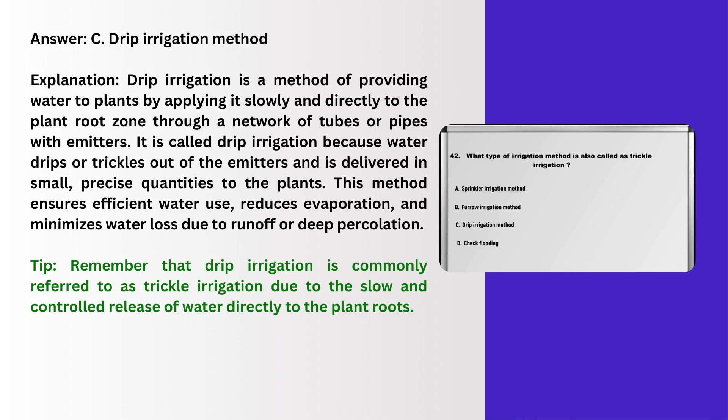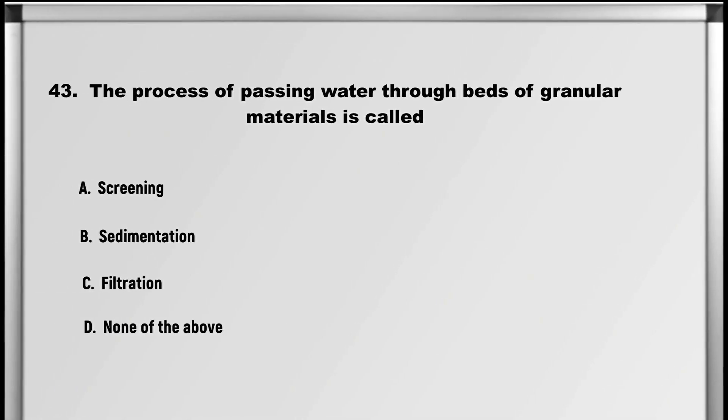Explanation: Drip irrigation is a method of providing water to plants by applying it slowly and directly to the plant root zone through a network of tubes or pipes with emitters. It is called drip irrigation because water drips or trickles out of the emitters and is delivered in small, precise quantities to the plants. This method ensures efficient water use, reduces evaporation, and minimizes water loss due to runoff or deep percolation. Tip: drip irrigation is commonly referred to as trickle irrigation due to the slow and controlled release of water directly to the plant roots.